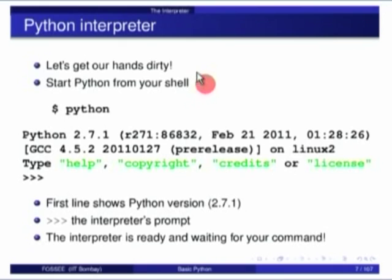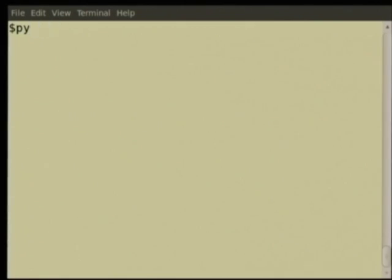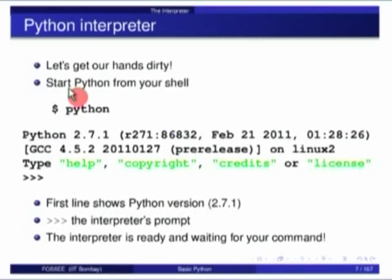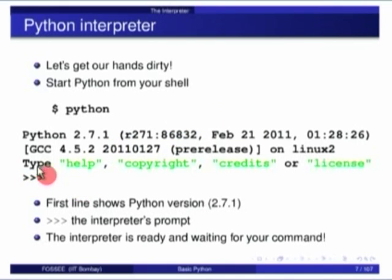Let us look at the interpreter. To get started, on your terminal you start the Python interpreter on the shell and you will get something that looks like this. Here we are running Python 2.6.5. Once you start Python you will see text that tells you about the Python version you are running, and you will get a prompt with three arrows which is the interpreter's prompt — it is basically waiting for you to give it some input.